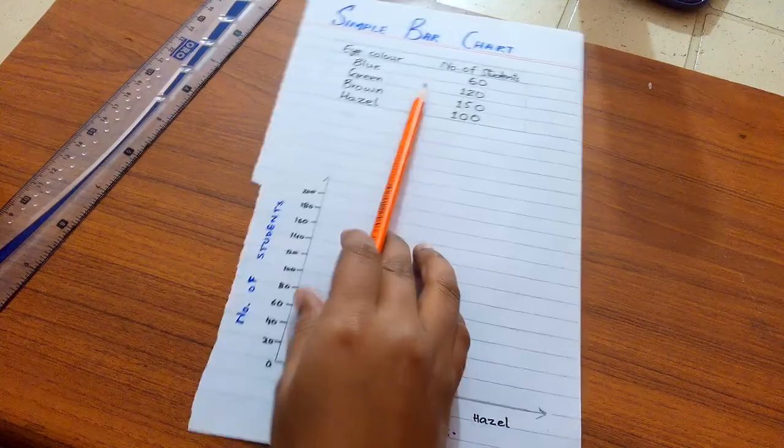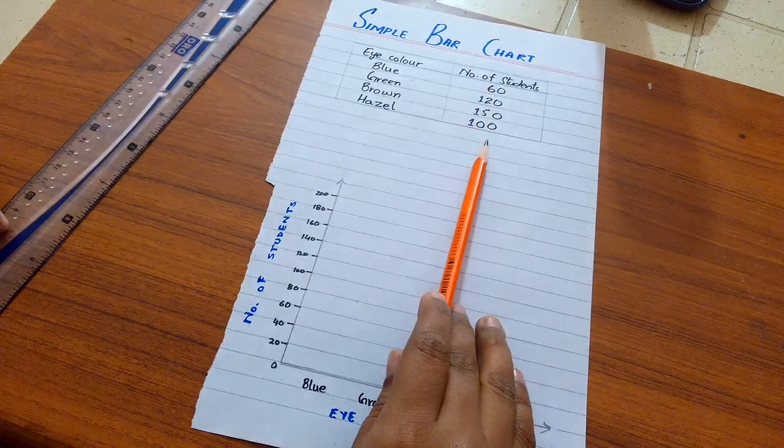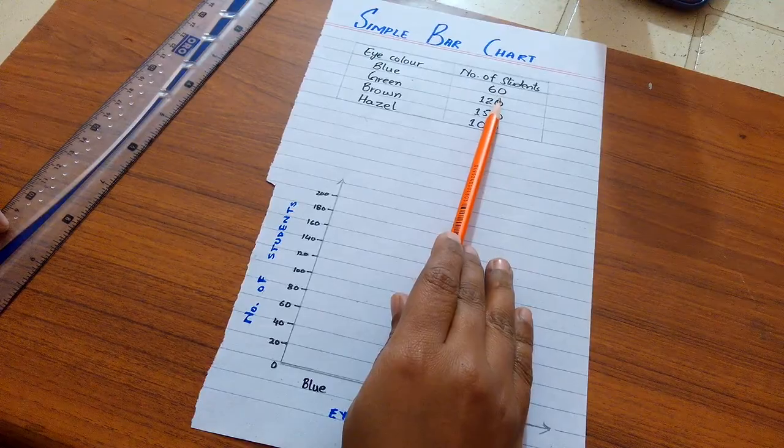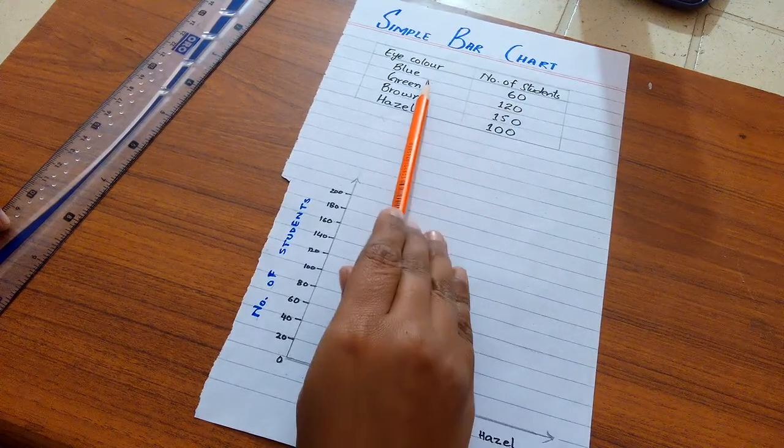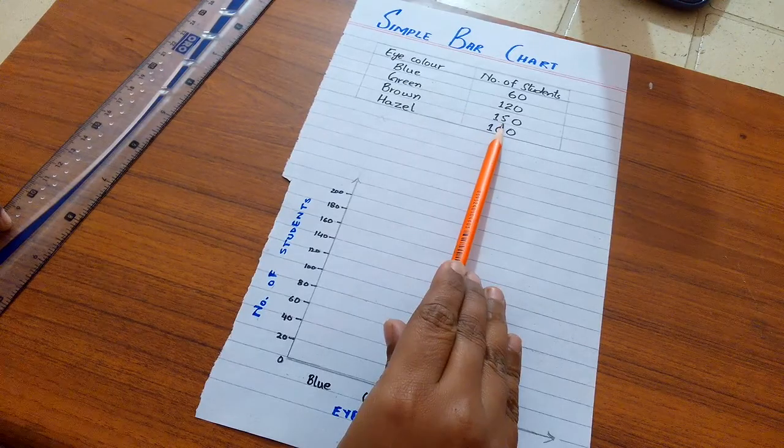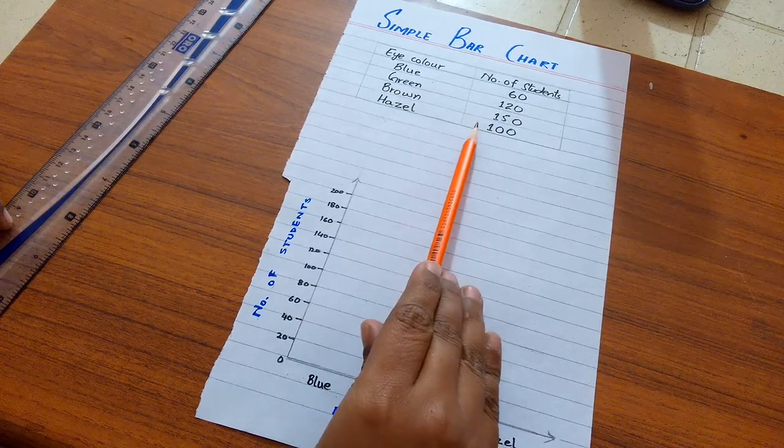I have a data set in which I have a number of students having different colors of eyes. In the given data set, 60 students have blue eyes, 120 students have green eyes, 150 students have brown eyes, and 100 students have hazel eyes.